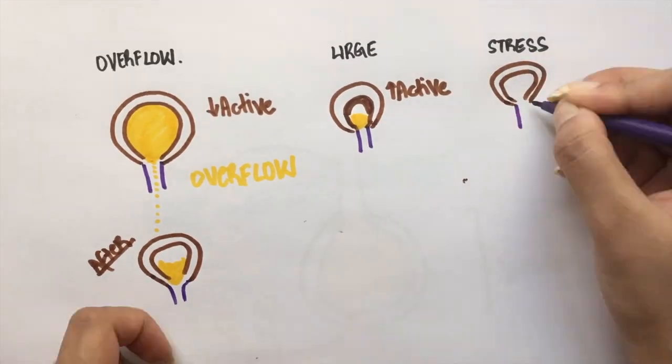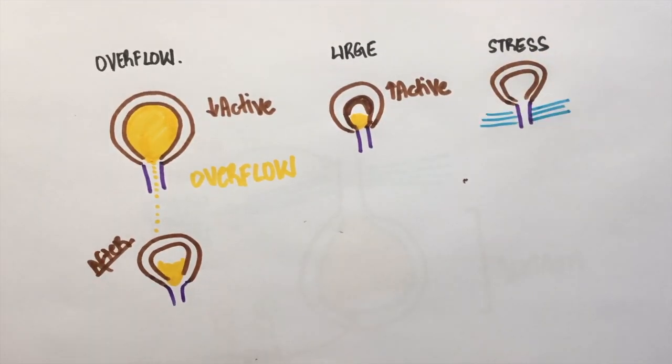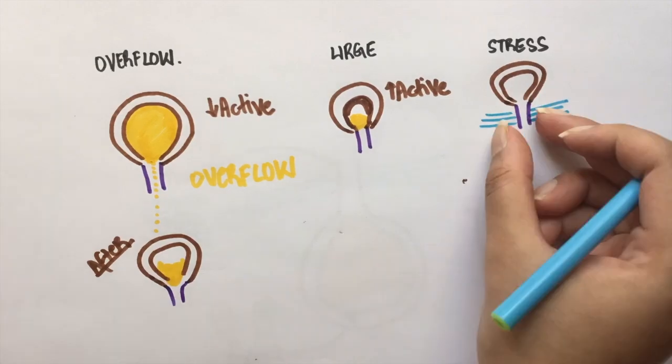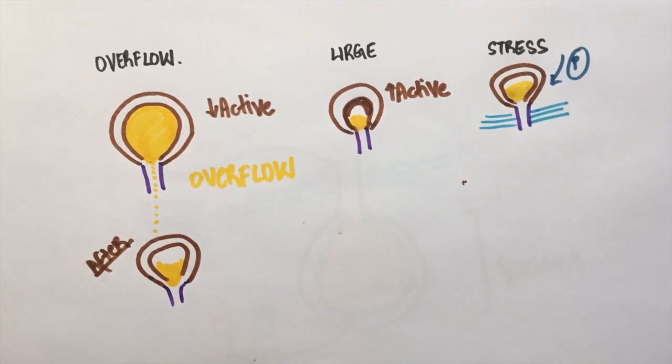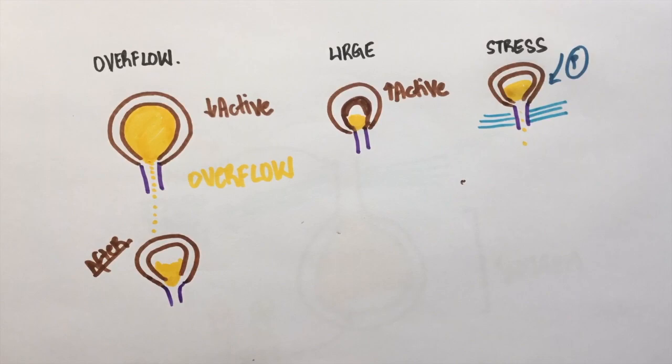Stress incontinence is caused by weak pelvic floor muscles. These muscles sort of hold the urethra together. So when there is pressure from here, the pelvic muscles will prevent emptying of the bladder. When these muscles become weak, a slight increase in abdominal pressure is enough to cause intermittent emptying of the bladder.